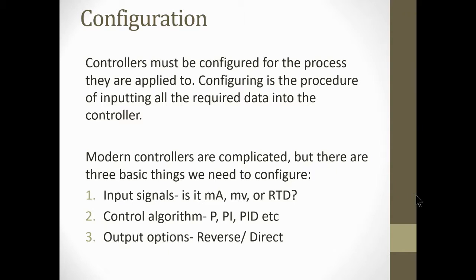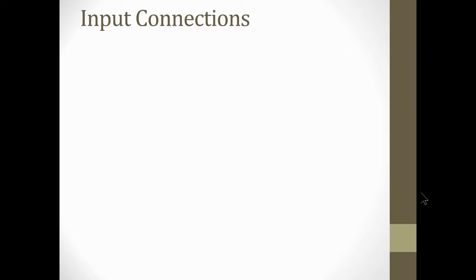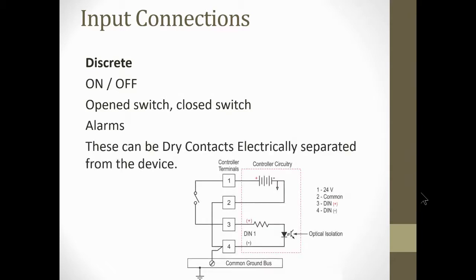Then of course we have the output options, and they can be reverse or direct acting controllers. Input connections: discrete, on-off, open switches, closed switches, things like that. Alarms: we have annunciation panels that will alarm. These can be dry contacts, electrically separated from the device. So when we talk about electrically separated, we talk about this right here, this optical isolation. Here I've got an LED and here I've got a transistor, so it's optical isolation. I'm optically isolating the output from the inputs. That's very important. We call it galvanic isolation where there's no wires or no solid connections between the input and the output. This one here just happens to be optical isolation.